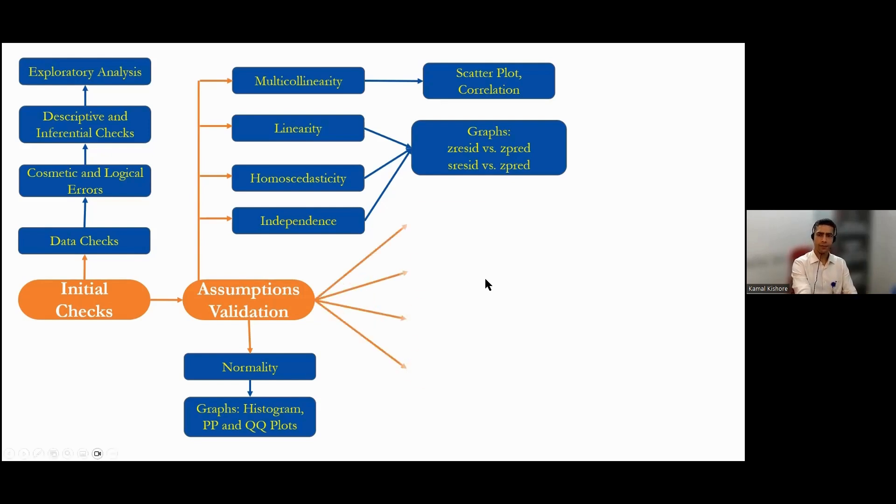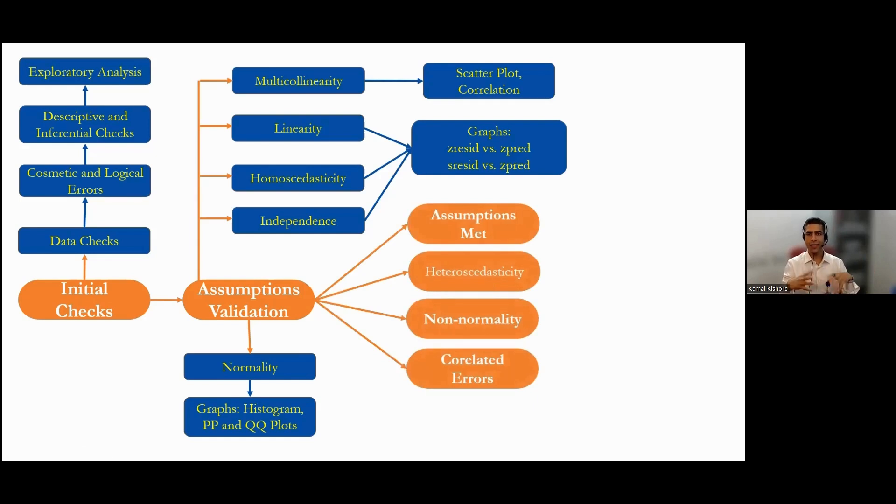Now, the next part is, once we test those assumptions, now when the assumptions are met, all assumptions are met. Let's see what to do. Most of the assumptions are met, but heteroskedasticity is not met. Data is not homogeneous. It is heterogeneous. Then if non-normality is valid, other are met. If it is a correlated error, then what should we do? So we need to have different, different sets. When assumptions are met, be very clear that apply the regression equation. There is nothing much to do. You just simply go with the regression.